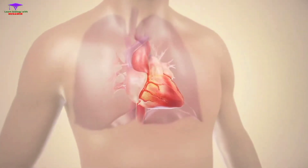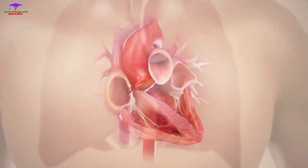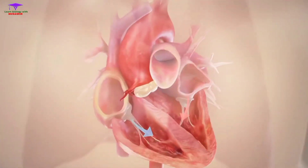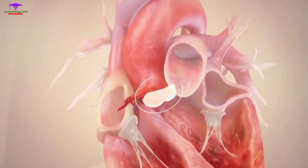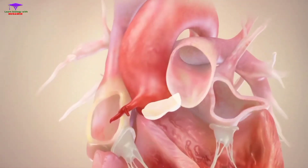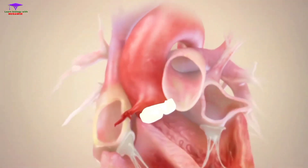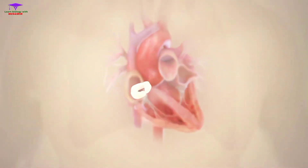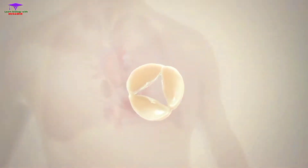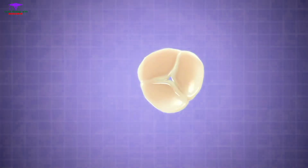The heart functions to pump blood to the body and relies on valves to move blood through and out of the heart. The aortic valve directs blood from the heart to the aorta, the main artery that delivers blood to the body. Typically, this valve has three cusps that open and close to allow blood to flow through.